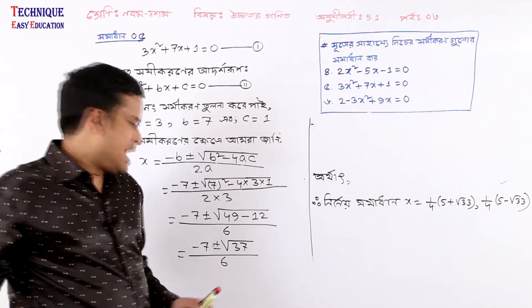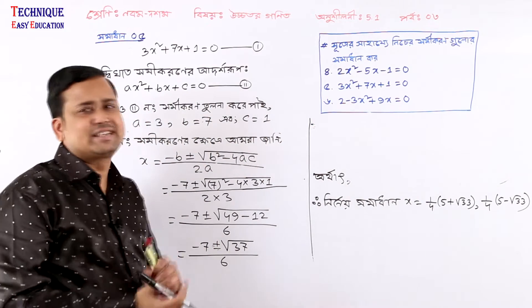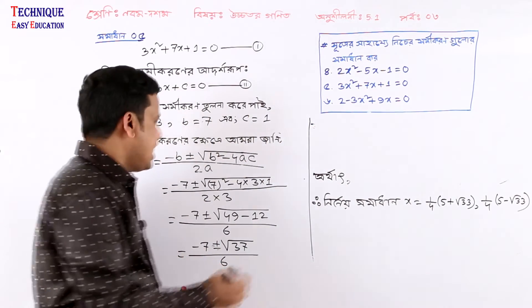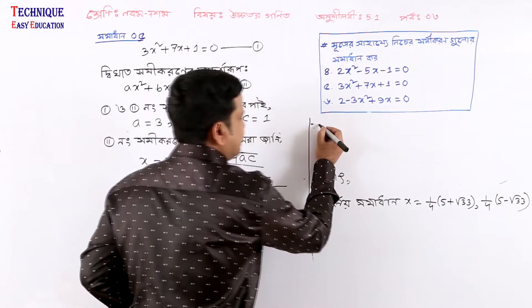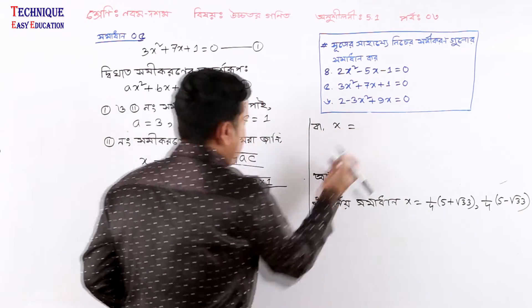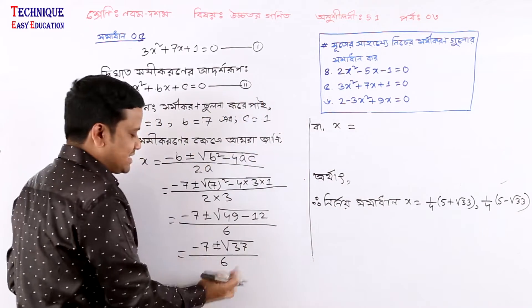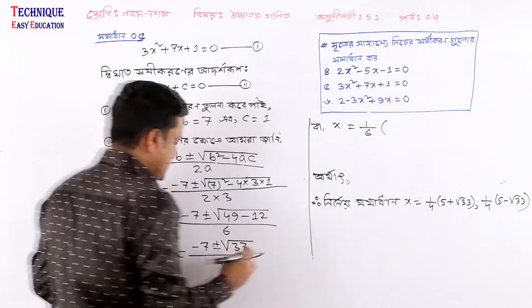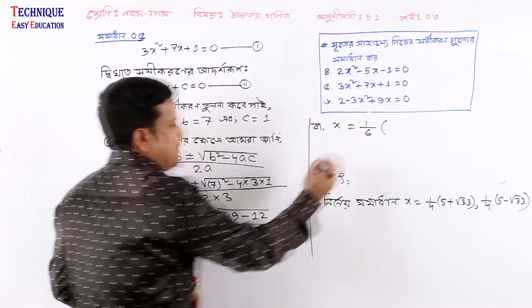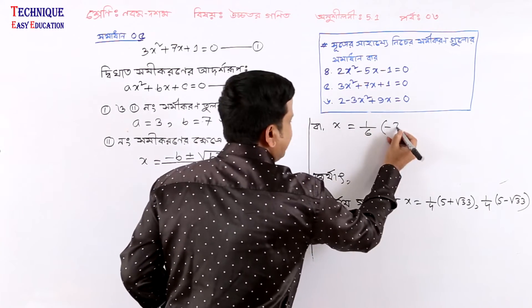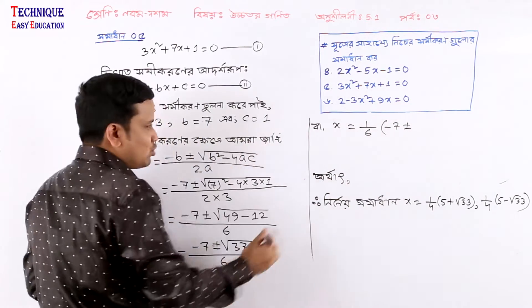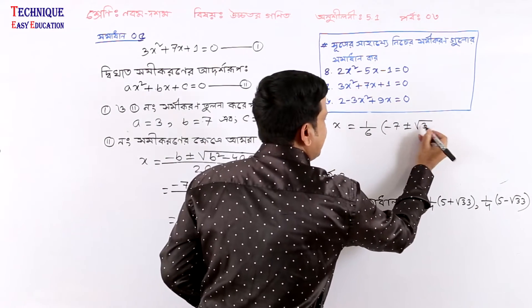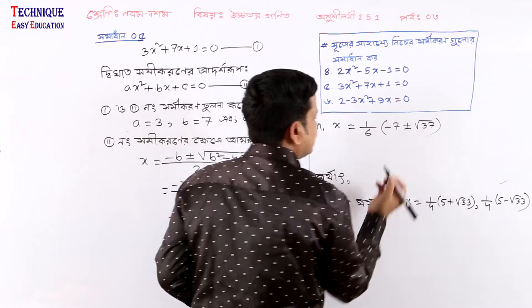We are going to take 1 by 6. So x equals 1 by 6 times minus 7 plus minus root 37. Our first solution is called x1.